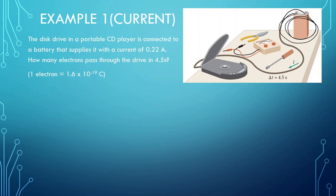So electrons go through this really, really fast, creating electricity, and we want to know how many electrons pass through it in 4.5 seconds. How we're going to look at this problem is: the current is equal to the amount of charge over a given period of time. We know what the current is — it's 0.22 amps. We don't know how much charge goes through it, but we want to find how much charge goes through it in 4.5 seconds.